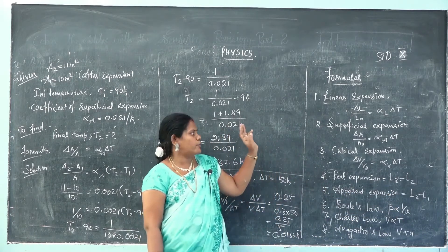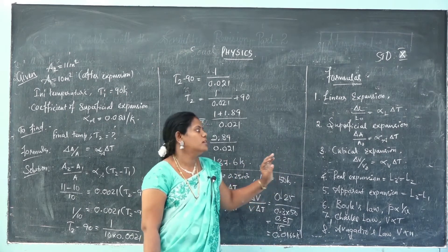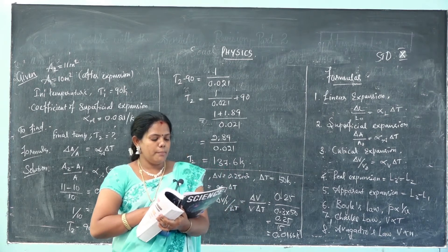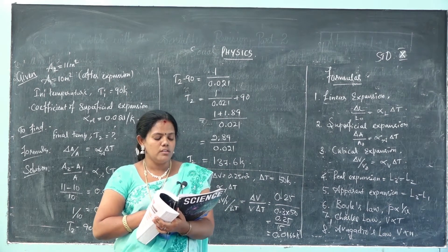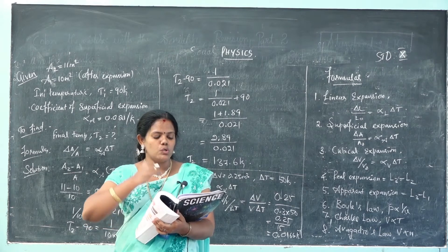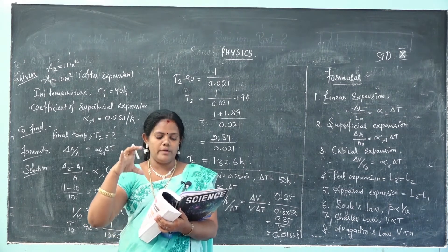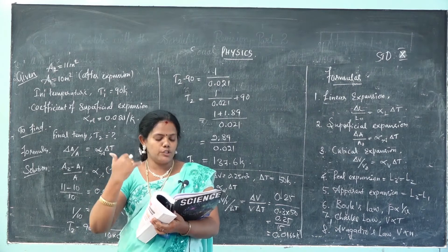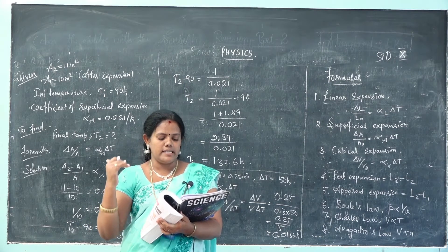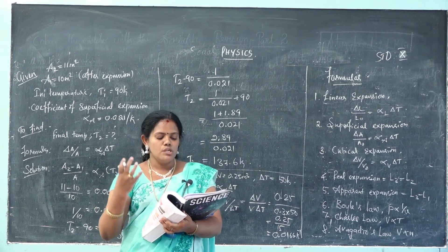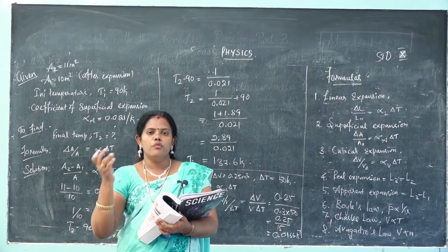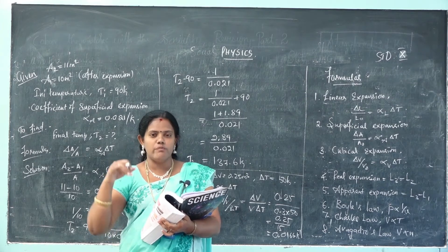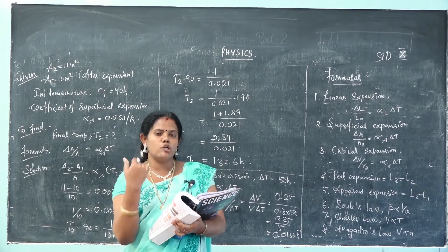Make sure you write down all the formulas in this lesson. Now the first exercise problem: find the final temperature of a copper rod whose area of cross section changes from 10 square meters to 11 square meters due to heating. The copper rod is initially kept at 90 Kelvin. We need to calculate the final temperature at which the area increases from 10 to 11 square meters.